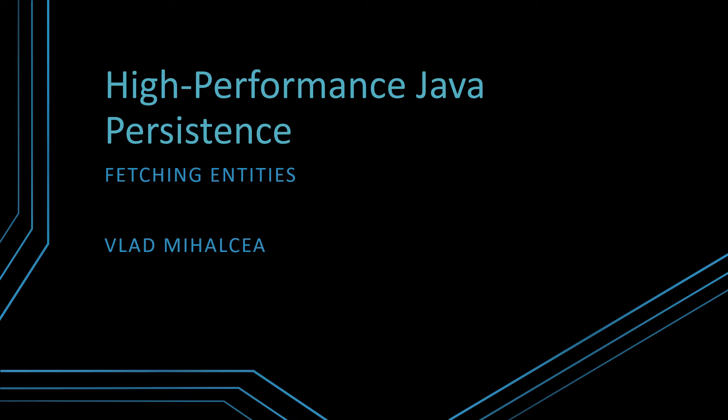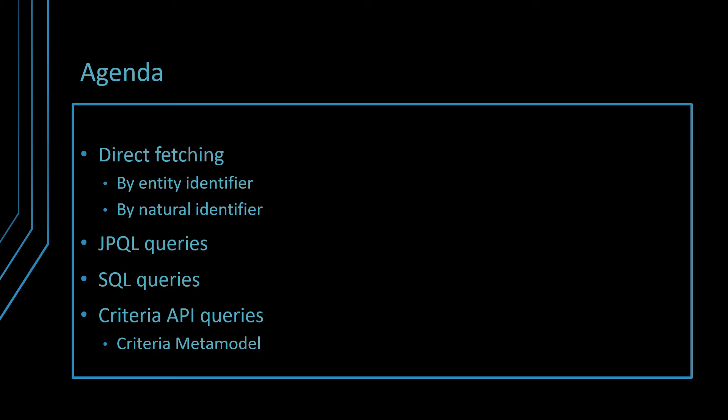Welcome to a new episode of my High Performance Java Persistence video course. In this episode, we're going to talk about fetching JPA and Hibernate entities. First, I'm going to explain how you can fetch entities directly via their Entity Identifier or Natural Identifier. Afterward, we're going to see how we can fetch entities via JPQL, SQL, and Criteria API queries. In the end, I'm going to explain how the JPA entity metamodel works and why you should use it when building dynamic queries with the JPA Criteria API.